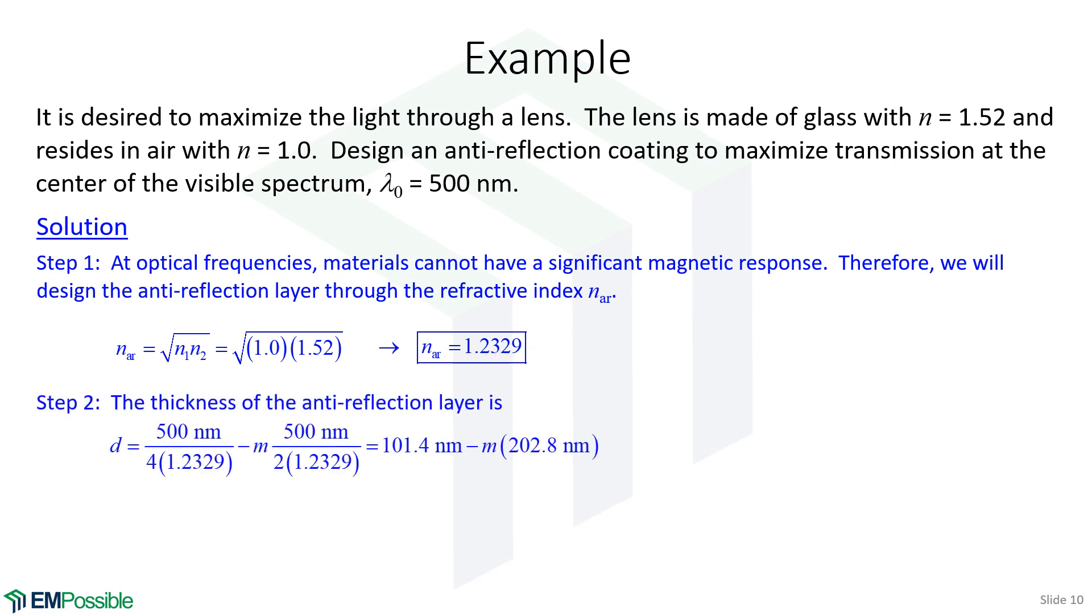After that, we can calculate the thickness. And so the thickness is going to be 101.4 nanometers. And then plus or minus integer multiples of 202.8 nanometers. And I say plus or minus, but really it should only be plus because we can't have negative thicknesses. So most people would just choose the M equals zero solution. And they would say the thickness of this anti-reflection coating should be 101.4 nanometers.